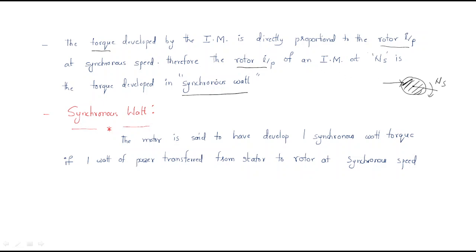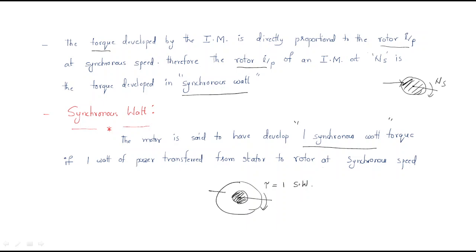We can further define the synchronous watt: a motor is said to have developed one synchronous watt of torque if one watt of power is transferred from stator to rotor through the air gap at synchronous speed. Simply put, when one watt of air gap power is applied to the rotor at synchronous speed, the torque developed is called one synchronous watt.